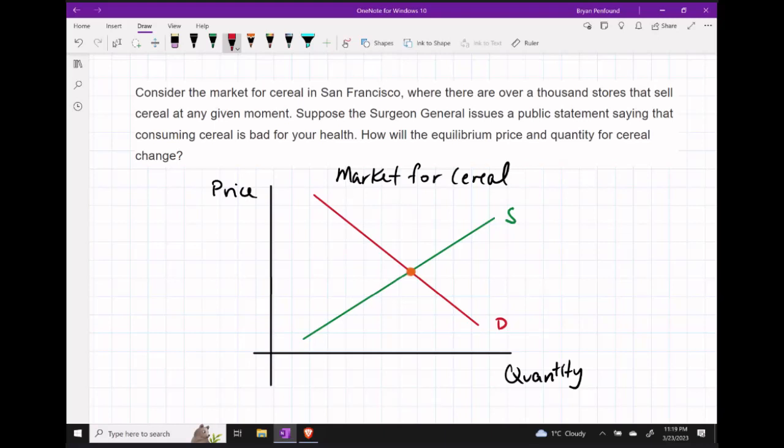In this example, let's consider the market for cereal in San Francisco, where there are several competitors at any given moment.